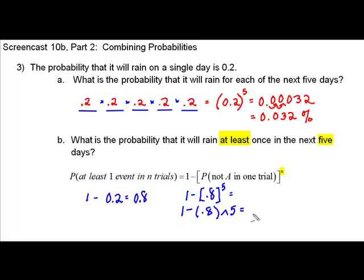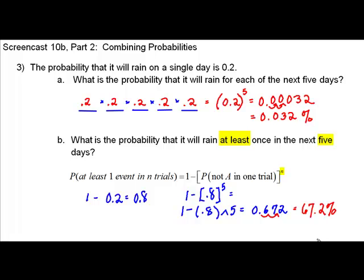If you do the computation correctly, you should end up with six hundred seventy-two thousandths. If we convert that to a percent by multiplying by one hundred, we will end up with sixty-seven and two-tenths percent. Much higher probability that it will rain at least once in the next five days versus raining for each of the next five days. Thank you for viewing this screencast.